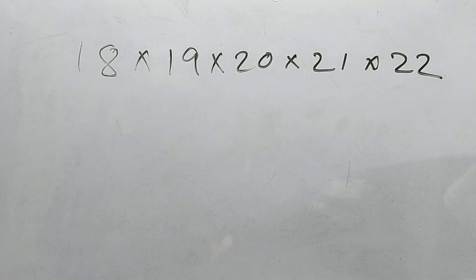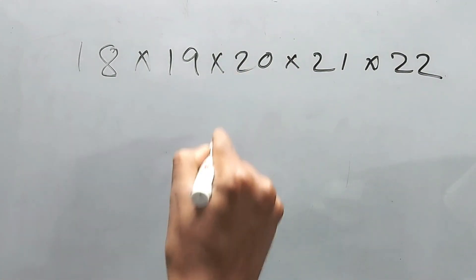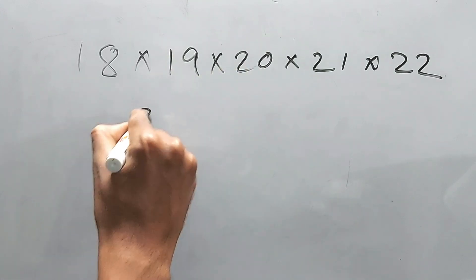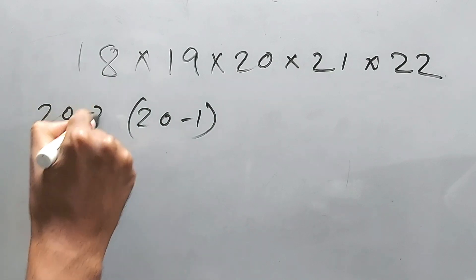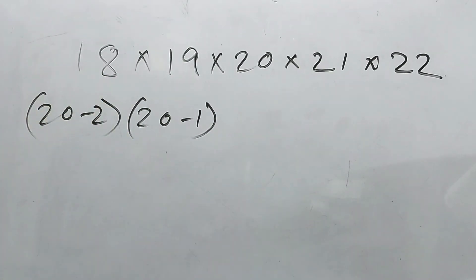Like 20, we can leave it as it is. And this one is 20 minus 1, right? This one is 20 minus 2, and rest you know this very well.